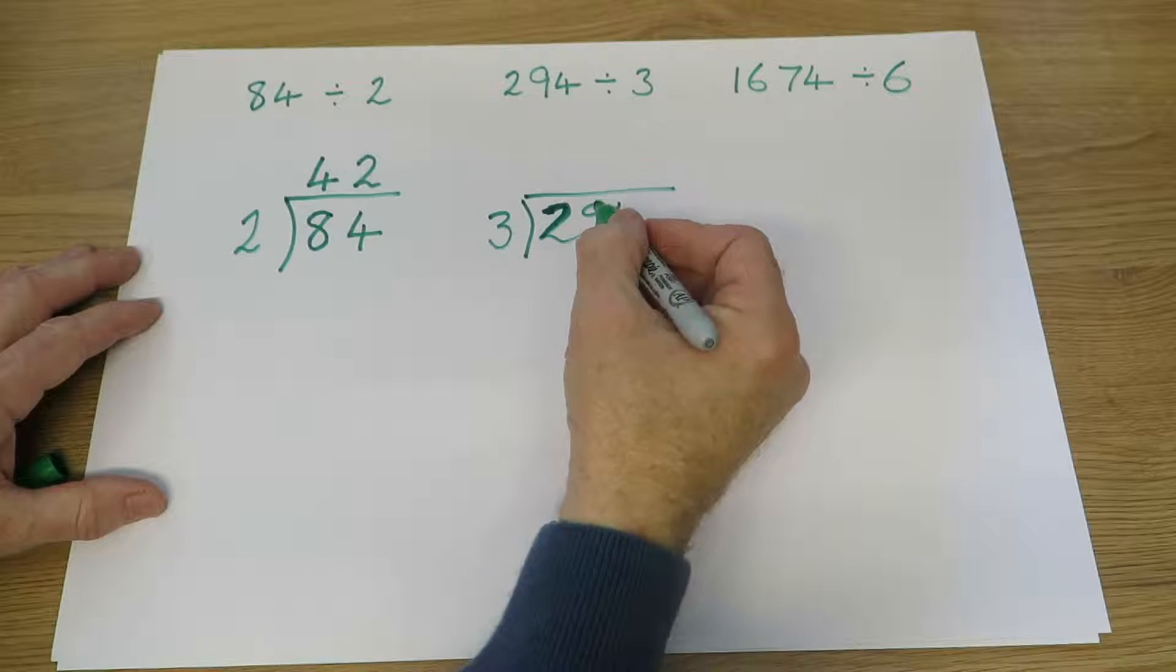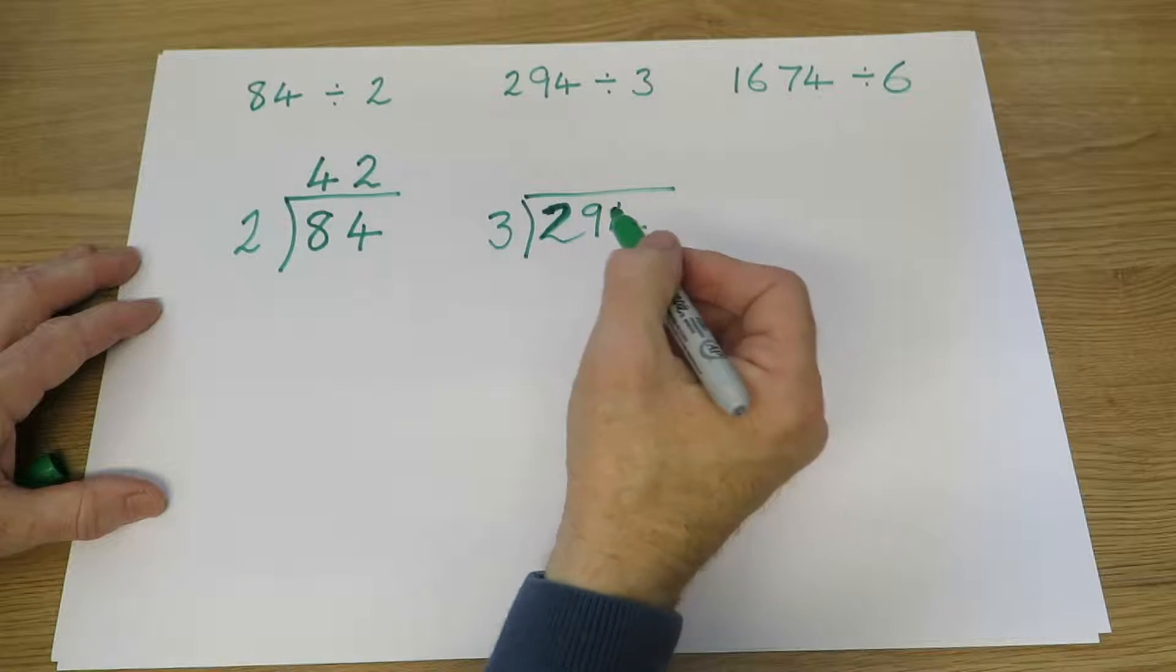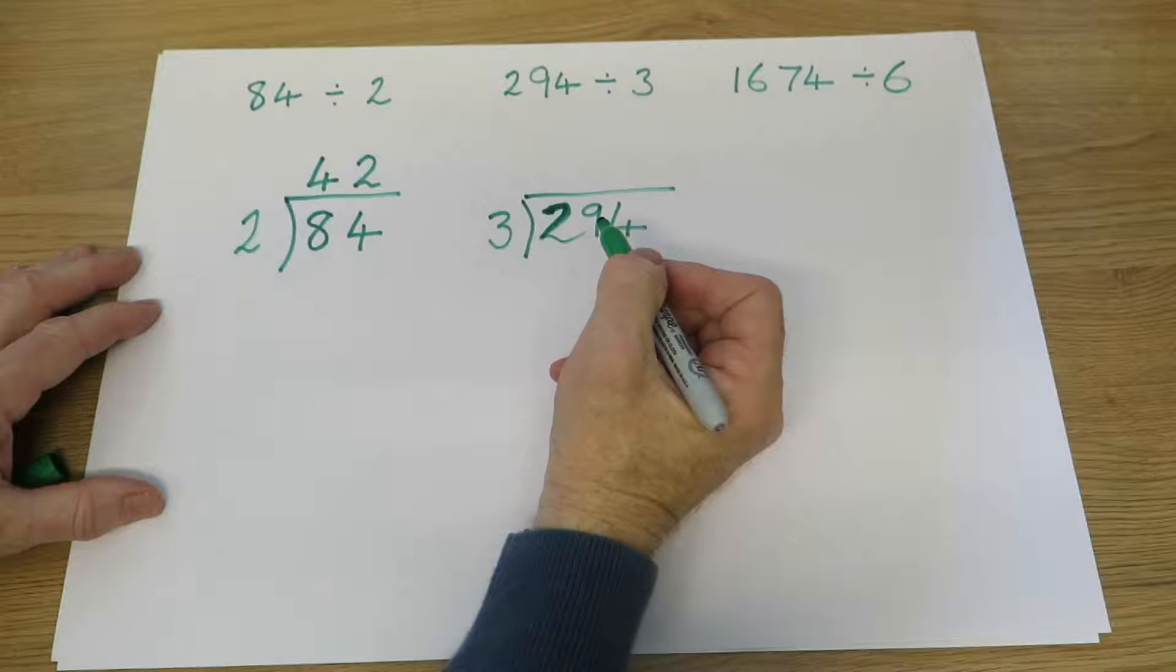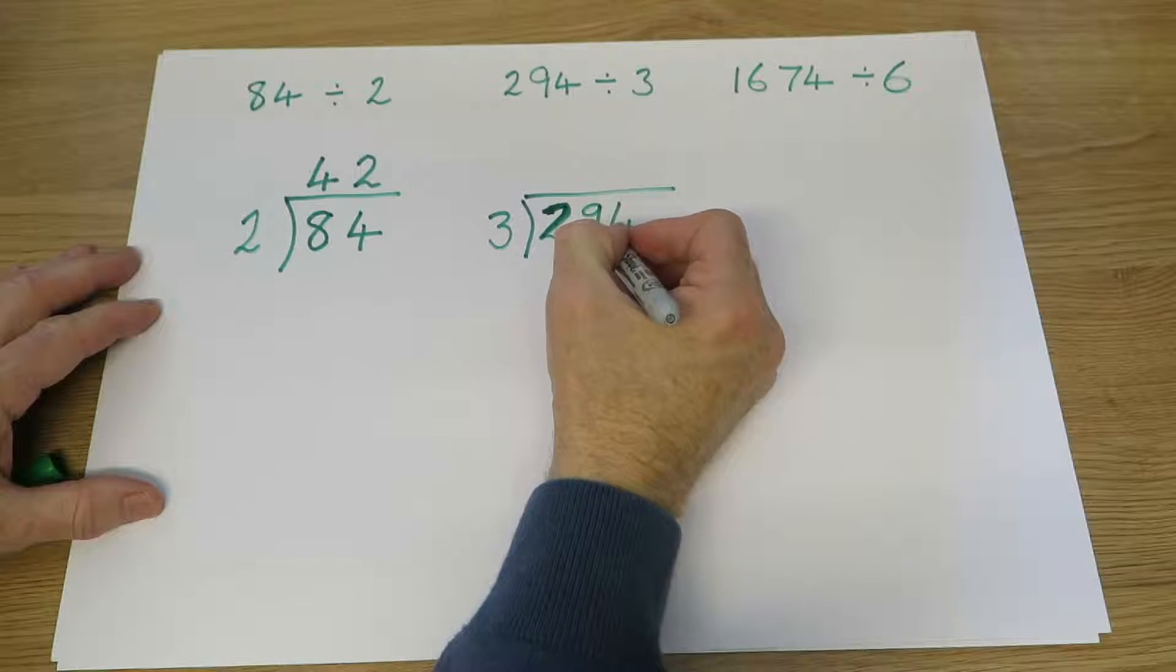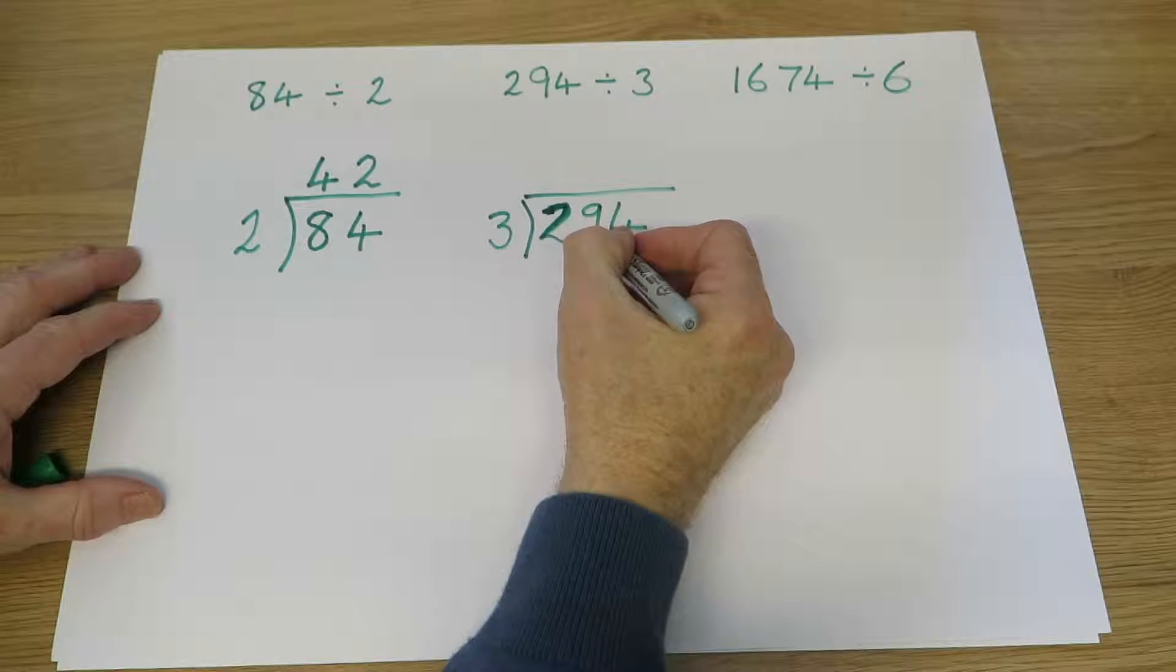294 divided by 3, so 200s, 9 tens, 4 units. First of all, we're going to say how many threes are there in 2? Well, there aren't any. So we'll have to take the 2 with us to the 9, and say how many threes are there in 29?